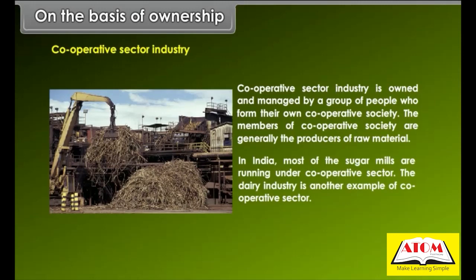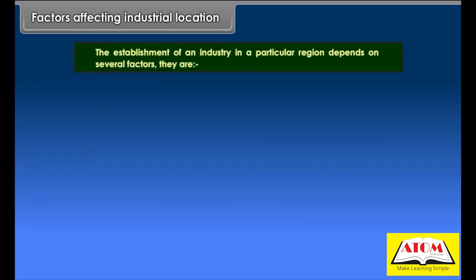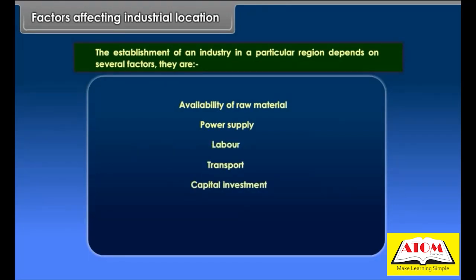Factors affecting industrial location: The establishment of an industry in a particular region depends on several factors — availability of raw material, power supply, labor, transport, capital investment, markets, and water supply.